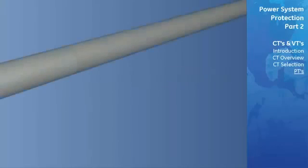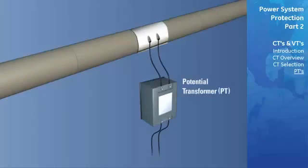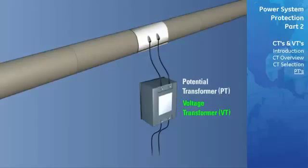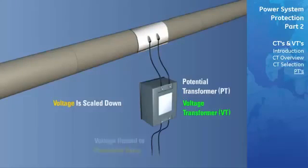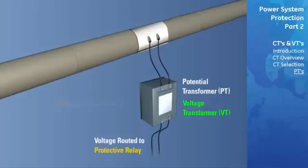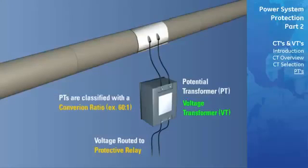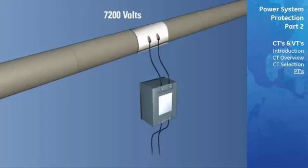The next type of transformer we will cover is the potential transformer, symbolized as PT, or sometimes known as voltage transformers symbolized as VT. Similar to current transformers, potential transformers scale down the voltage passed through them, as opposed to current. The scaled-down voltage is then routed to a protective relay for measurement. A PT is classified with a conversion ratio indicating the amount the primary voltage is scaled down. For example, 60 to 1 scales the primary voltage down to 120 volts.